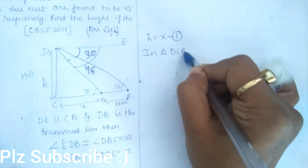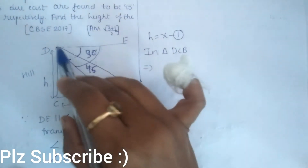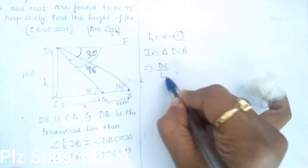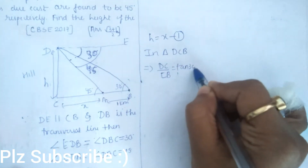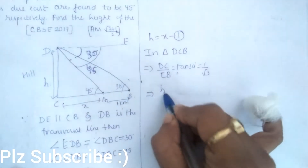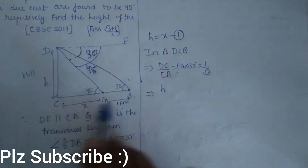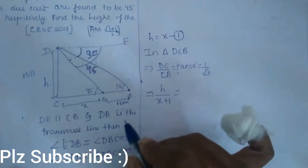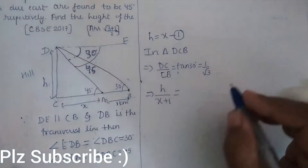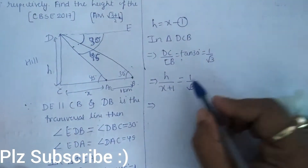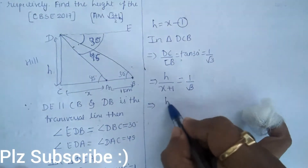Now consider right triangle DCB. In right triangle DCB, DC perpendicular upon base CB gives DC upon CB equals tan 30, which equals one by root three. DC is h and CB is x plus one, so h upon x plus one equals one by root three.